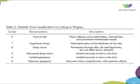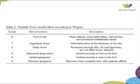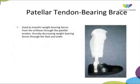Other bracing options include patellar tendon bearing braces and custom shoes. A total contact cast is designed to spread the load uniformly along the foot and ankle complex — not to have weight bearing concentrated in the forefoot or heel, so minimal padding except over bony prominences. It needs to be done by someone who knows what they're doing, because these patients are at risk of ulceration — if you create pressure areas in the wrong places you will have a disaster. Patellar tendon bearing braces are well described as another way to transfer weight bearing through to the patellar tendon and offload the foot and ankle region.